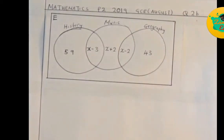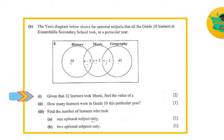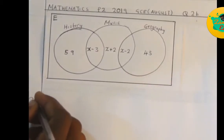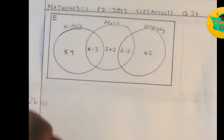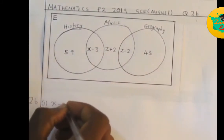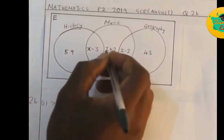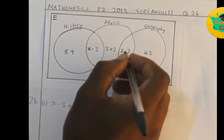Question number one: given that 12 learners took music, find the value of x. To answer that question, we begin with question 2b part 1. Since 12 learners took music, we set up the equation: x plus (x minus 3) plus (x plus 2) plus (x minus 2) equals 12.